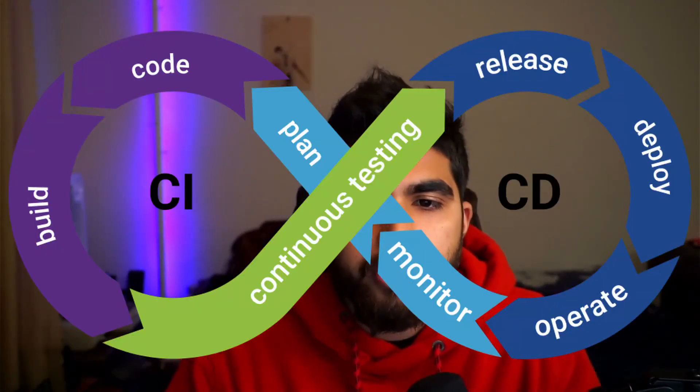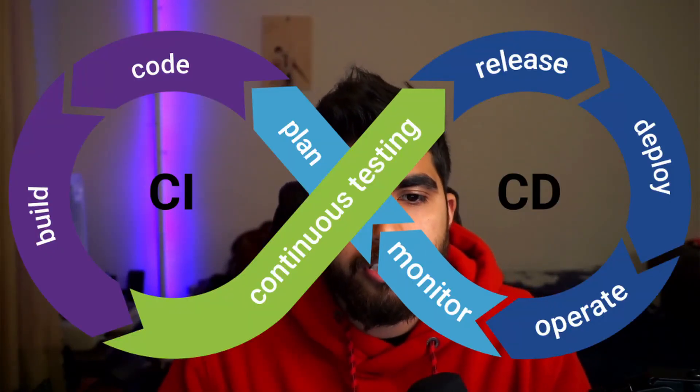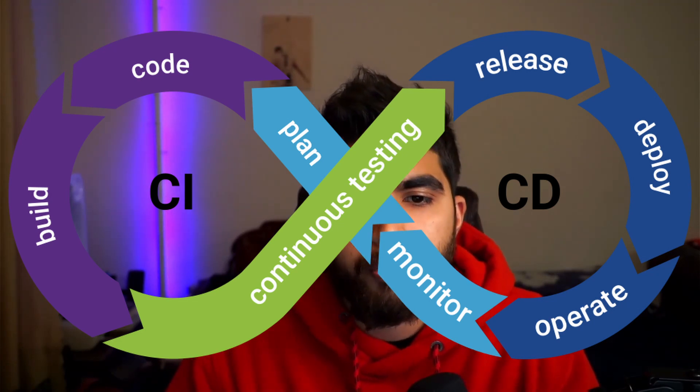The DevOps symbol resembles an infinity sign, suggesting that it is a continuous process of improving efficiency and constant activity. The DevOps approach makes companies adapt faster to updates and development changes. DevOps manages a streamlined flow between the teams and makes the software development process successful.